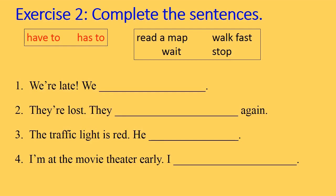Now take your paper again. I have an exercise for you. Complete the sentences with 'have to' or 'has to' and these words. Example number one: We are late. We have to walk fast. You have two minutes to do it.